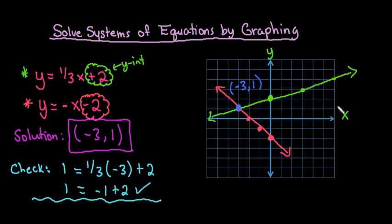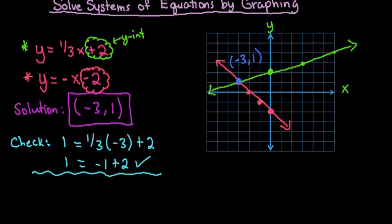And just because it works in one doesn't mean that the solution is correct. It does have to work in both of them because you're looking for the x and y values that make both of these equations the same. So with this, if I plug it into the second one as well, I would get 1 equals negative negative 3 minus 2. And negative negative 3 is really positive 3, and positive 3 minus 2 is 1. So we can see that this does work.